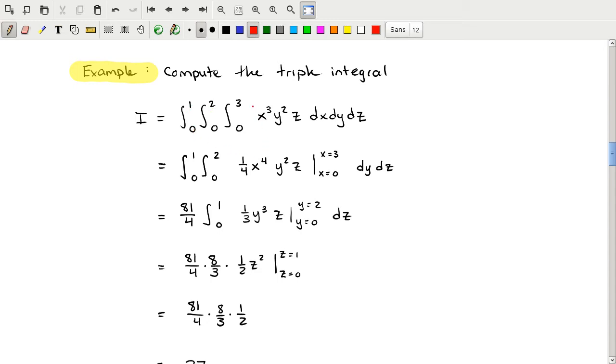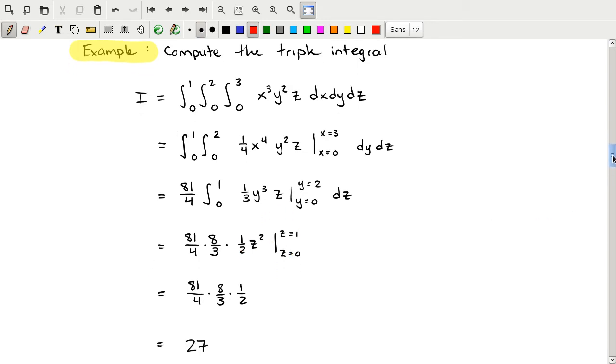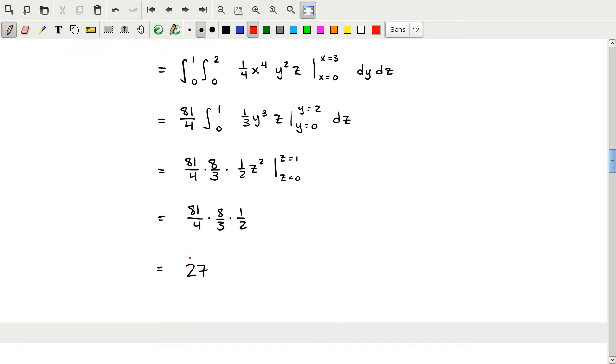We begin by integrating in x to get one quarter x to the fourth. x goes from 0 to 3. y squared and z are treated as constants, giving us 81 quarters y squared z. That is then integrated with respect to y, giving us one third y cubed z on the inside. The y is then evaluated from 0 to 2, giving us another constant times the integral of just z. That gives us one half z squared from z 0 to 1. The result of these three constant products is the volume itself.